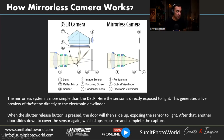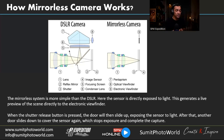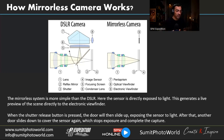The mirrorless system is simpler than DSLR. The sensor is directly exposed to light, generating a live preview of the scene directly to the electronic viewfinder. Whatever you see through the viewfinder is what you'll capture. When you press the shutter release button, the shutter plane opens — just like in DSLR — allowing light to reach the sensor and complete the capture. You see the same exposure and quality in the viewfinder as the final image.